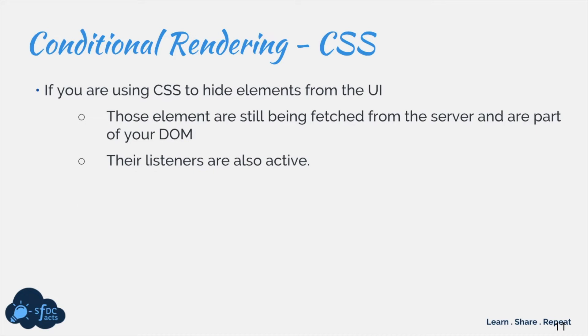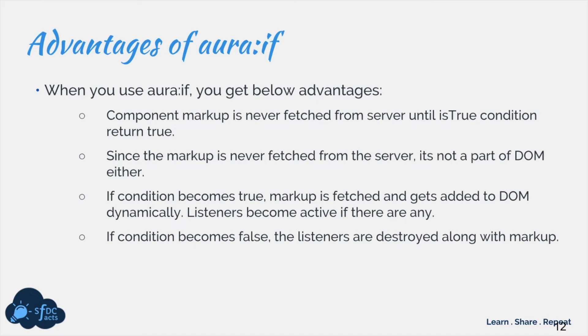If you use CSS to hide your component, the hidden component's markup is still part of your DOM. So if you have a markup of 100 lines of code, that is still in your DOM, and any event listeners on those elements are still active in the background. We don't need those listeners when the component is not rendered. That's where AuraIf is very useful. If you use AuraIf, the markup will only be loaded from the server when the condition inside the `is:true` attribute is true. As soon as the condition becomes false, the complete markup is destroyed along with its listeners, saving you a lot of active listeners and giving you a huge performance improvement on the browser side.